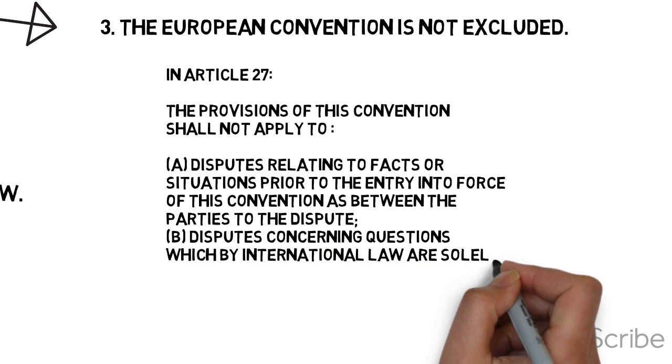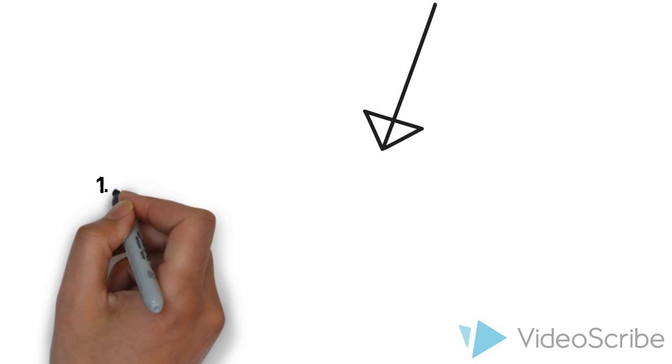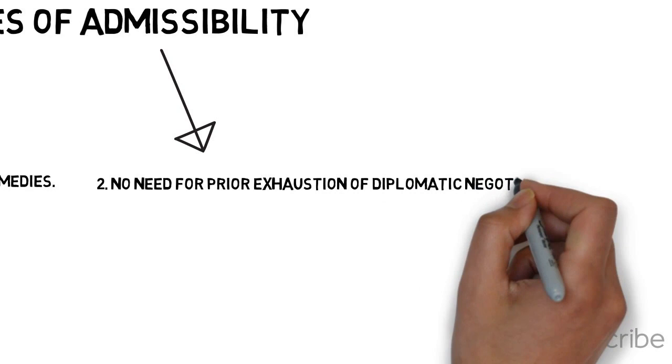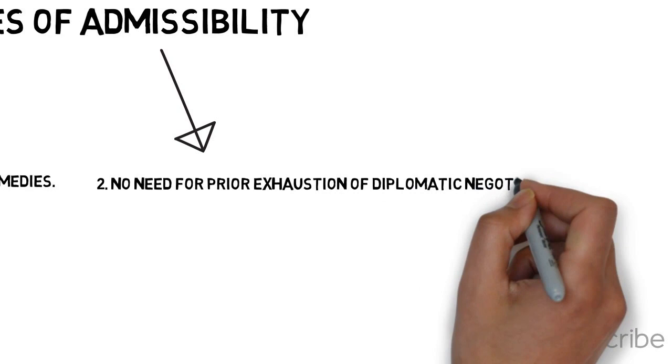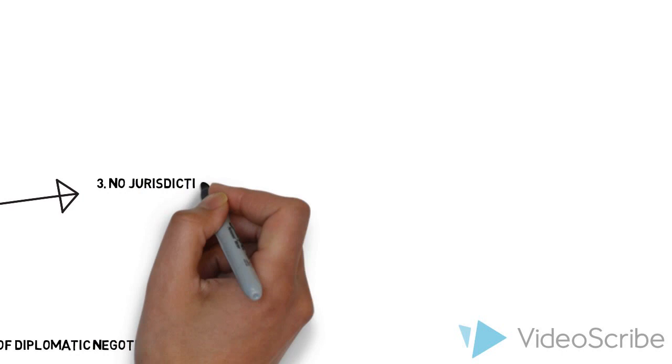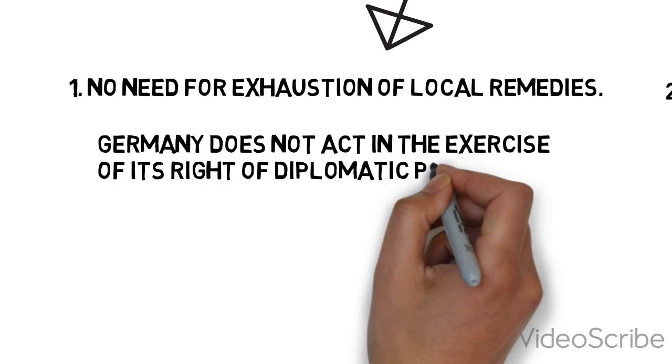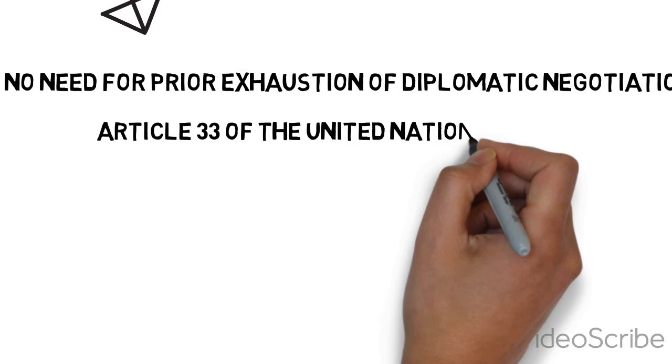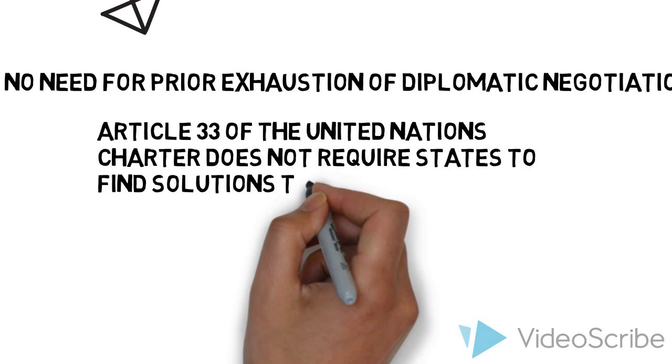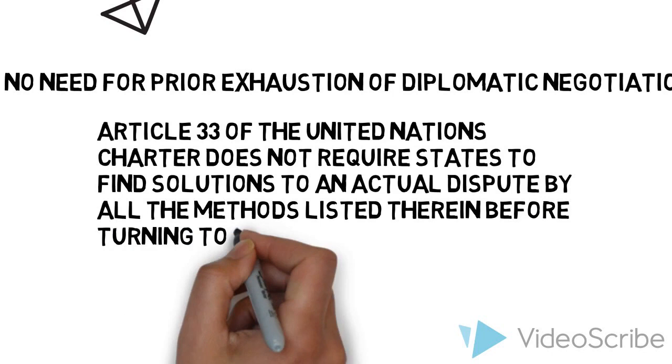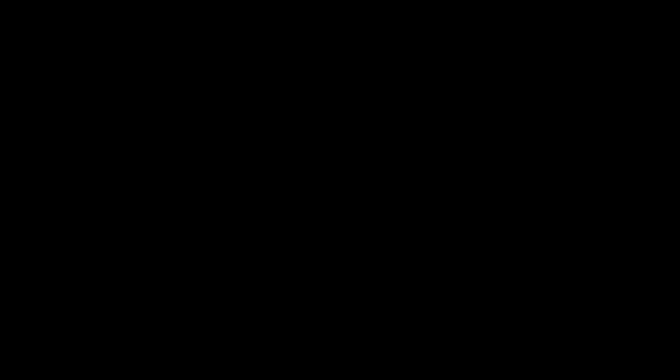On the other hand, we have issues of admissibility. The first point is about no need for exhaustion of local remedies. The second point is related with no need for prior exception of diplomatic negotiation. The third point is related with no jurisdiction of the court in the justice. Germany does not act in the exercise of its right of diplomatic protection in favor of its nationals, it acts only on its behalf. Article 33 of the United Nations Charter does not require states to find solutions to an actual dispute by all the methods listed before turning to the court. The present dispute is not covered by any of the jurisdictional clauses of the Treaty of Nice, Article 227.